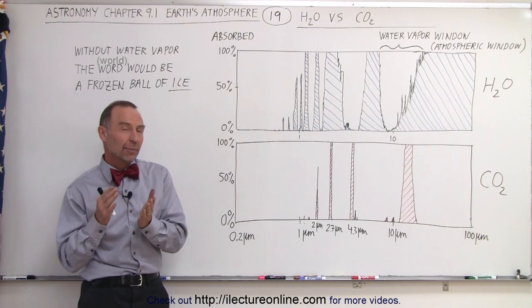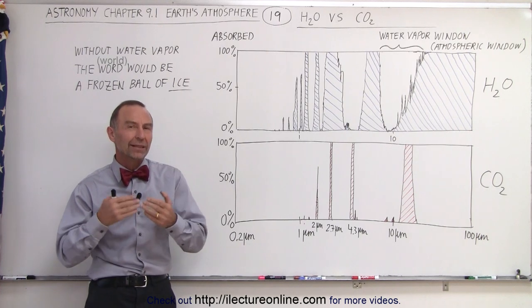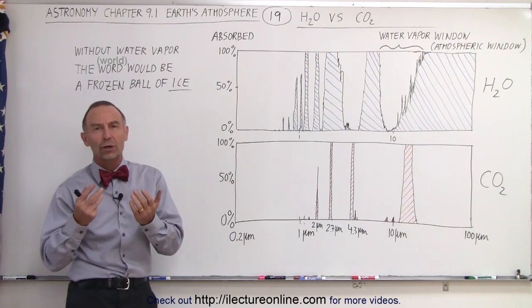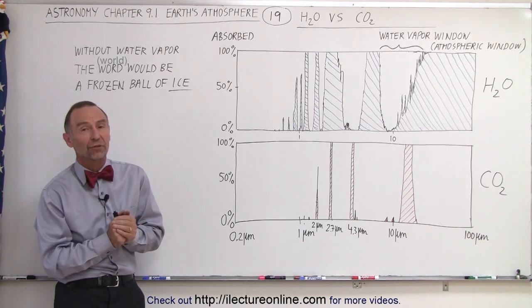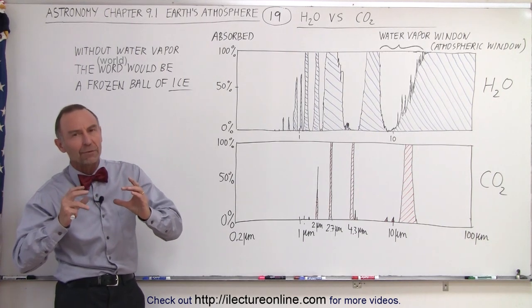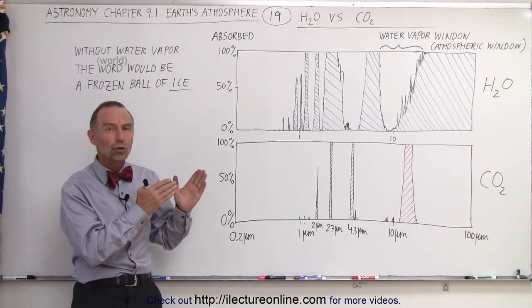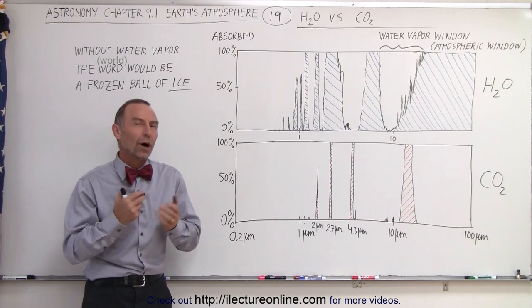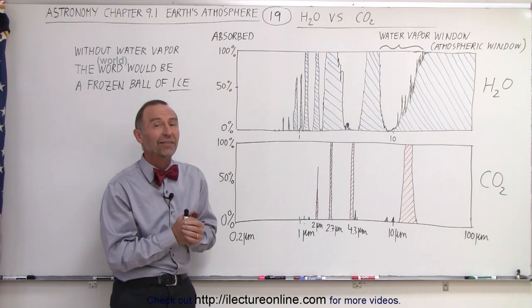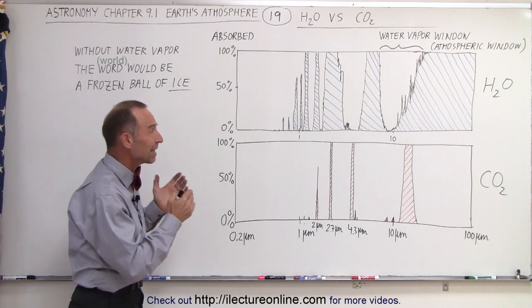We still haven't talked about what methane, nitrous oxide, and ozone can do in the atmosphere. They do play a relatively minor role, but these are the two big ones: carbon dioxide and water vapor. When you set them side by side, you see some striking differences.